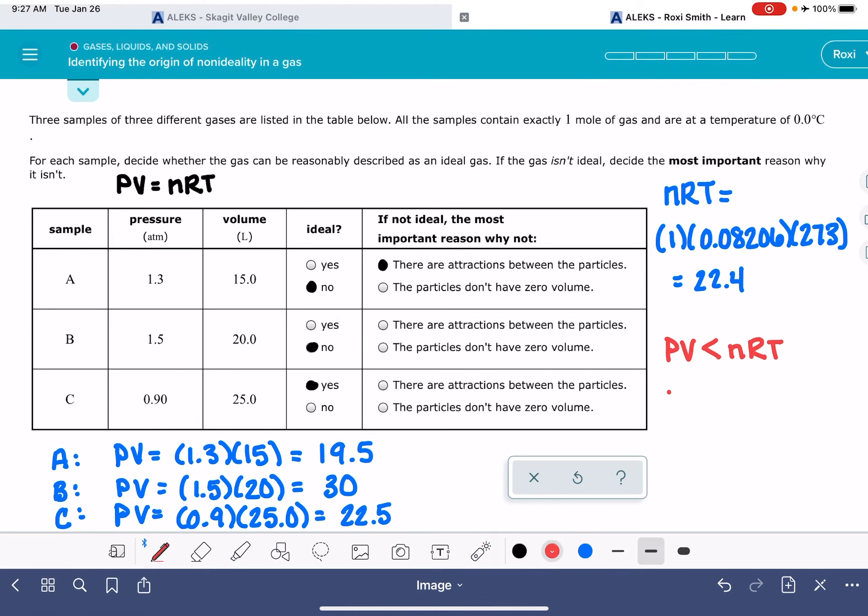For gas B, pressure times volume were greater than NRT. The pressure volume was 30, and NRT is 22.4. When pressure and volume are greater than what we would expect them to be, this is most likely due to the particles of gas not having zero volume. The particles of gas actually have volume, so that means it increases the volume of the sample of gas, which makes this side of the equation too big.